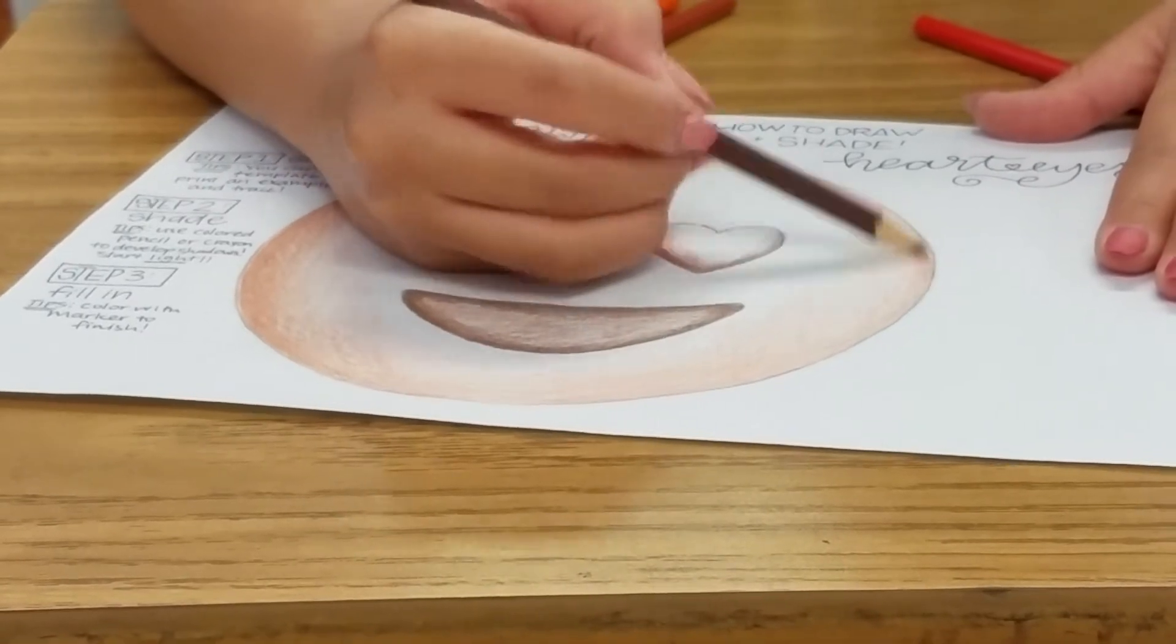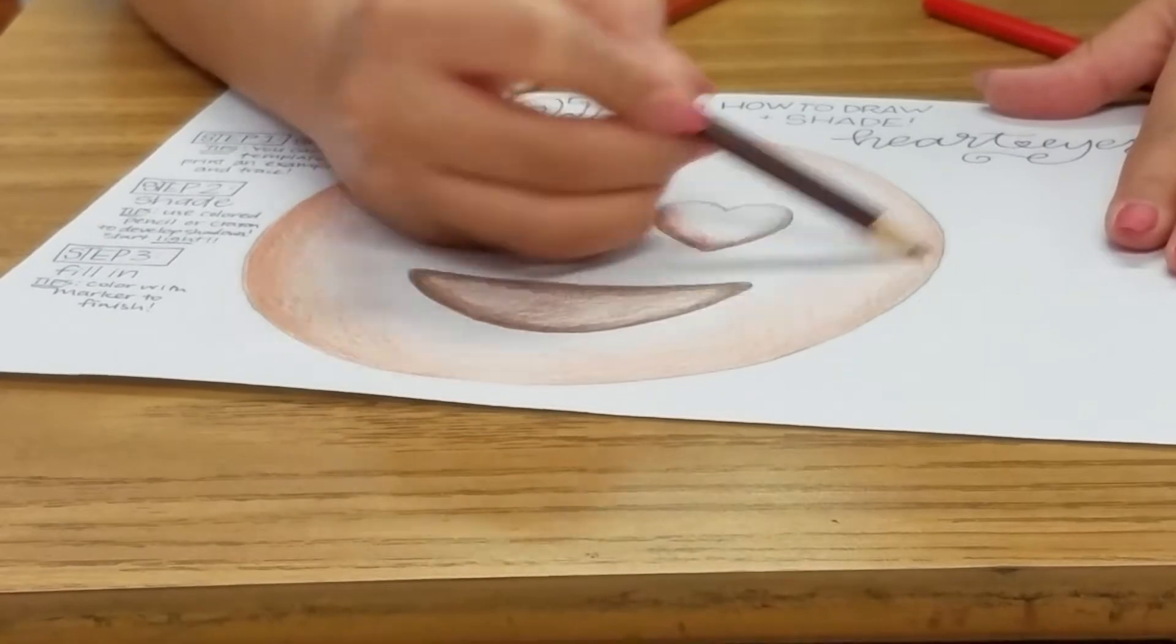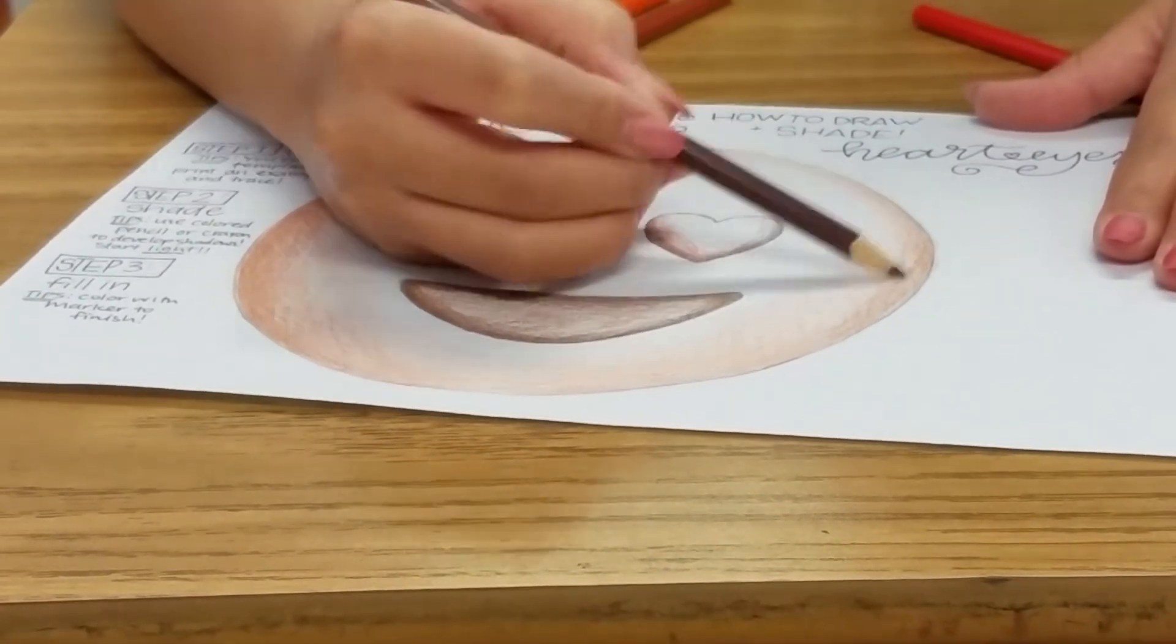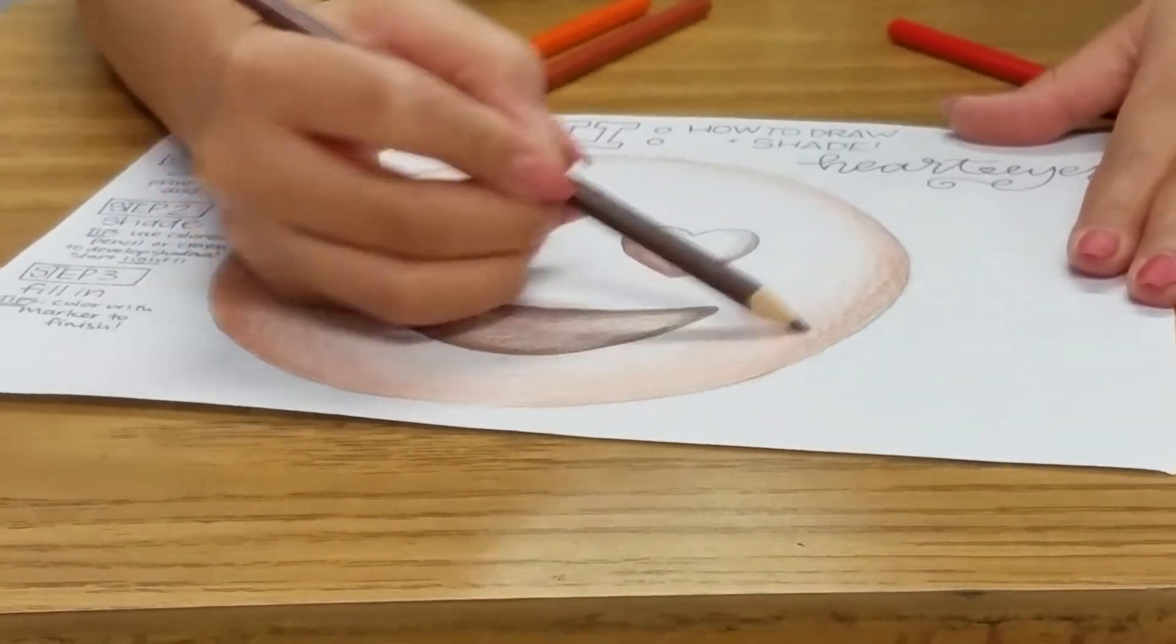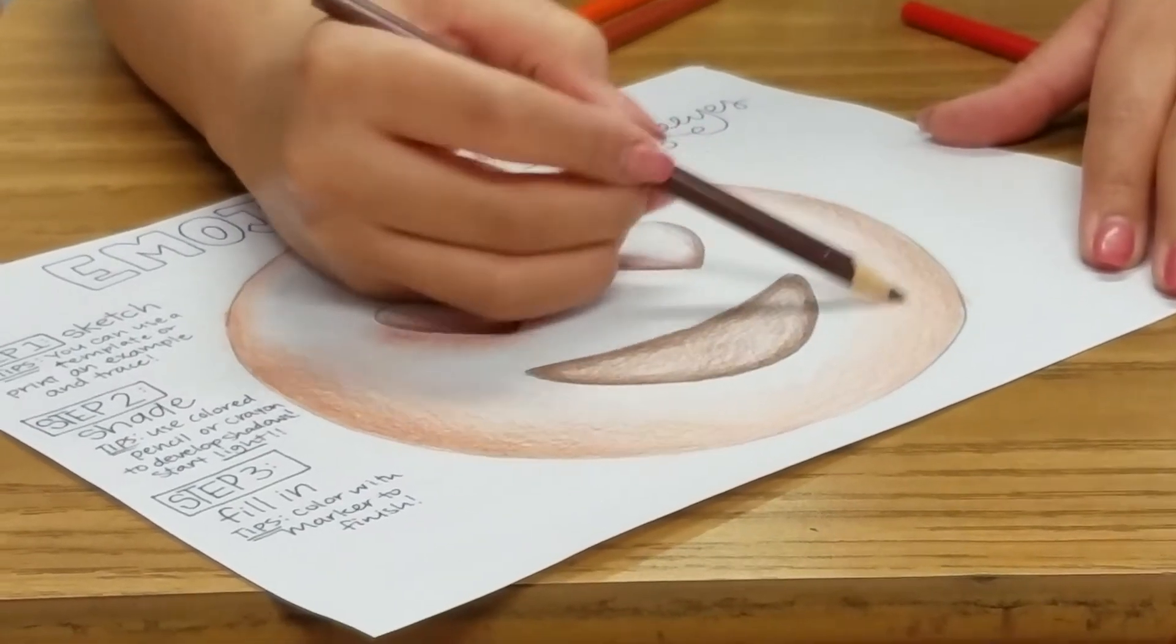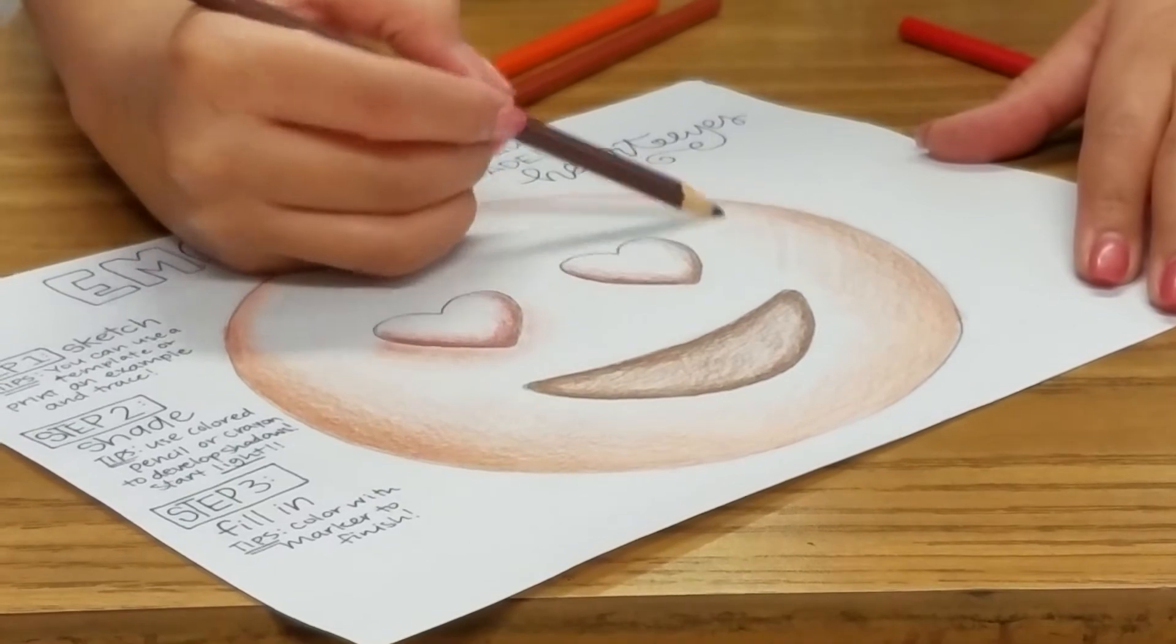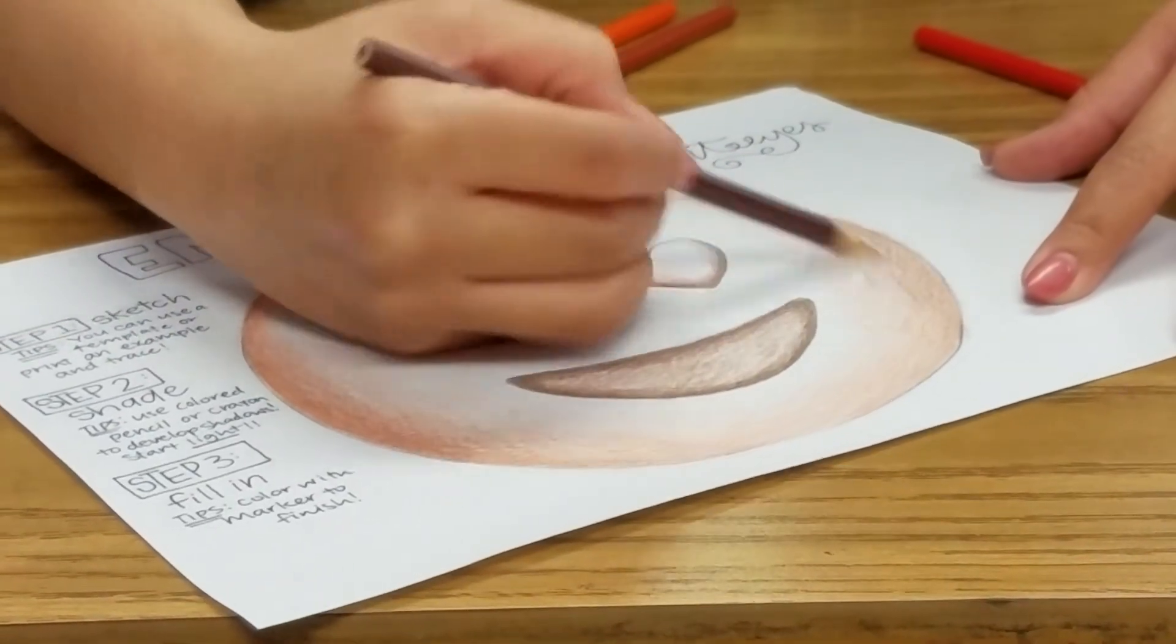I'm gonna go and tuck in the edge again on this side because he is a circle. You see how white that is? You can always build it up.